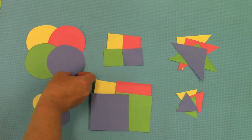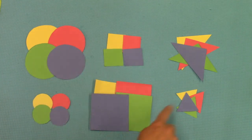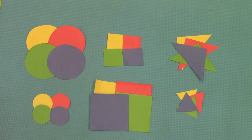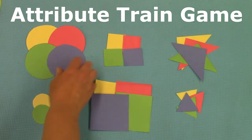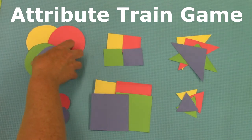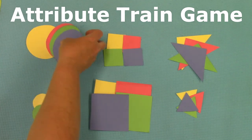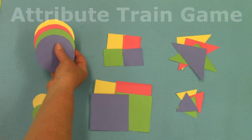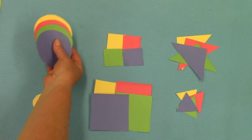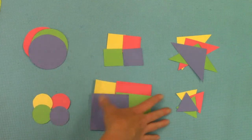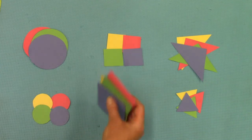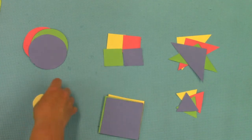Today we are going to play a game with all of our shapes and it is called the attribute train game. We're going to pretend that all of these pieces are cars on a train and we can only put them beside each other if they have two things that are the same.